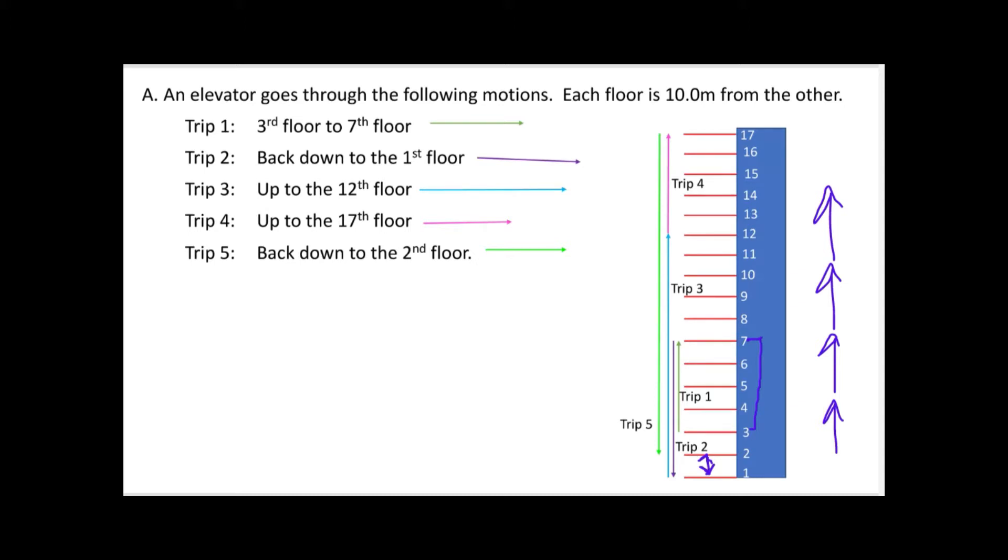Cool, okay. So that's going to be 40 meters. And then when it gets there, it's going to go back down to the first floor, so then we're going to have 1, 2, 3, 4, 5, 6 spaces, so that'll be 60 meters. And then from the first floor it's going to go way up to the 12th floor, so I'm going to count spaces again. For my third trip it's going to be 1, 2, 3, 4, 5, 6, 7, 8, 9, 10, 11.